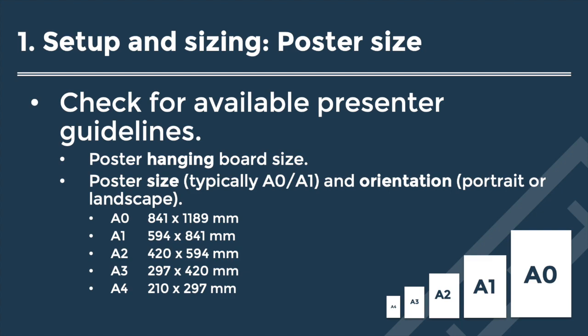Let's begin with setup and sizing, starting with the poster size. If you are designing a poster for an event such as a conference, it's really important to check for available presenter guidelines. Conference organisers usually send these out well in advance. Sometimes organisers will give you the poster hanging board size, so it's important not to confuse this with the actual size of the poster. Typically, the average conference poster is A0 or A1, and the orientation can be portrait or landscape. It's so important to get this right before you get your poster printed.